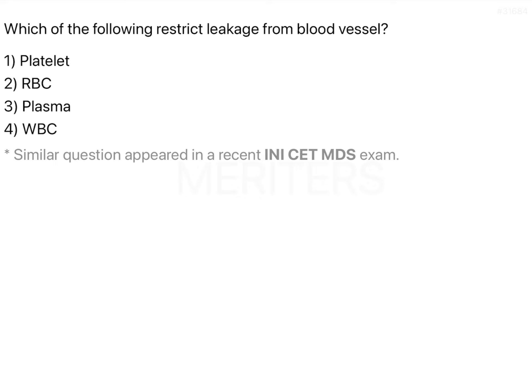This is something very interesting and is like a giveaway from the NBE side or the AIIMS side actually. The options are very clear here: platelet, RBC, plasma, and WBC.